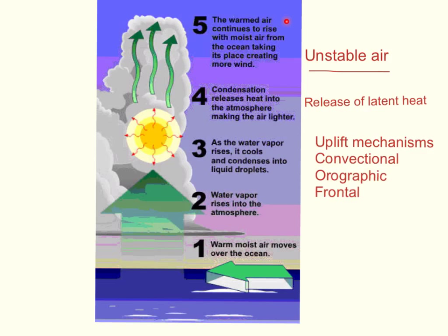So the warm air carries on rising, and that sucks up more warm, moist air from the ocean. As the air rises, it creates a partial vacuum below, which is filled by more warm, moist air being drawn in from the sides. That then starts to rise as well, so this process as a whole causes tropical storms to begin to form.